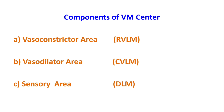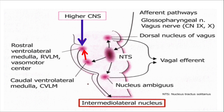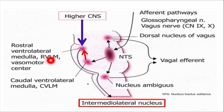The components of the vasomotor center are: the vasoconstrictor area or RVLM, the vasodilator area, and finally the sensory area. We will discuss the vasoconstrictor area or RVLM first. As you can see, this is the vasomotor center located in the brainstem and these are its various components.